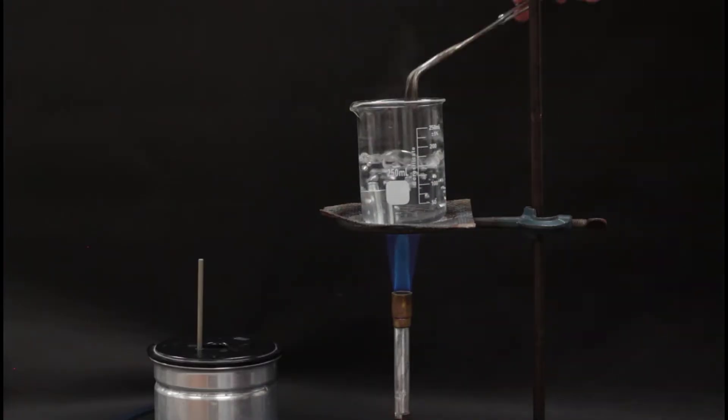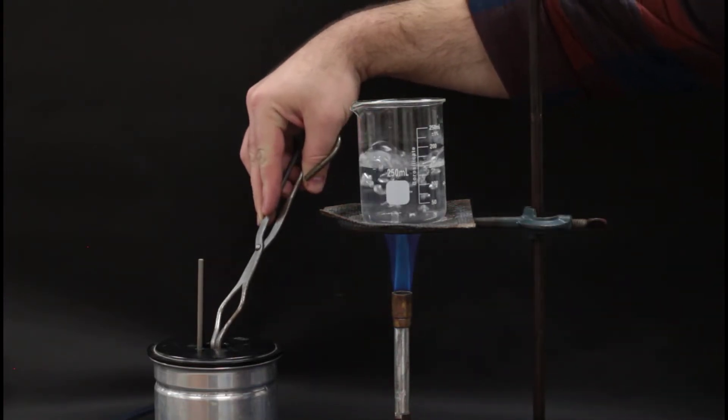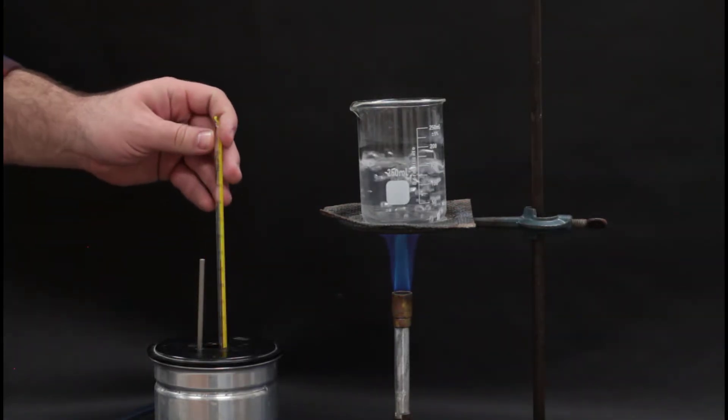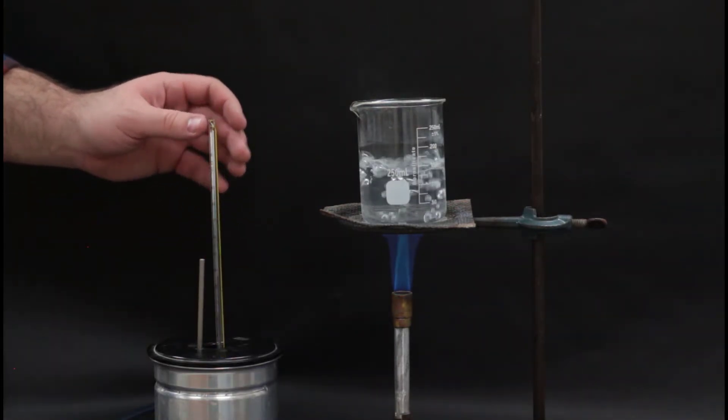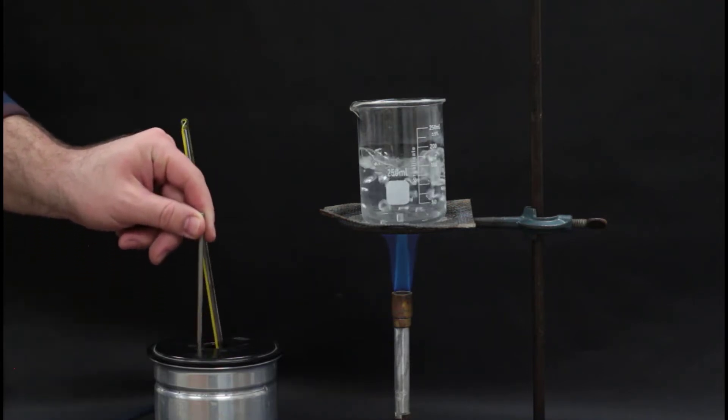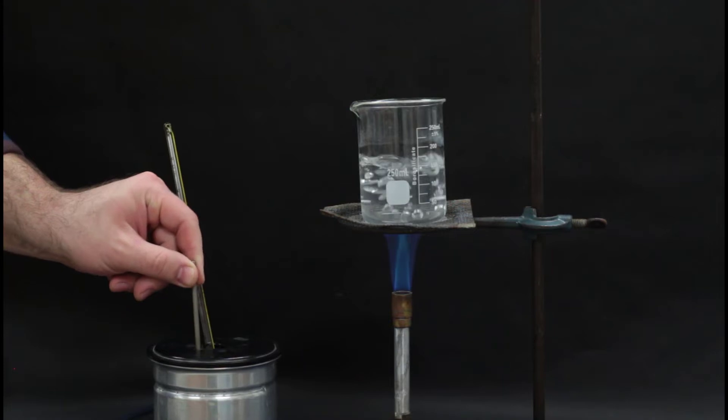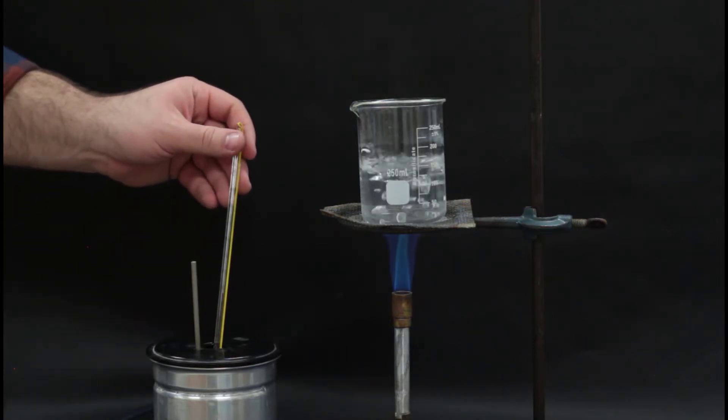Next, use the tongs to carefully move the metal from the boiling water to the calorimeter. You'll want to do this quickly so that the metal doesn't lose too much energy to the air. Mix the water around a little bit and record the peak temperature of the water. Record this as the final temperature of the metal and the water.